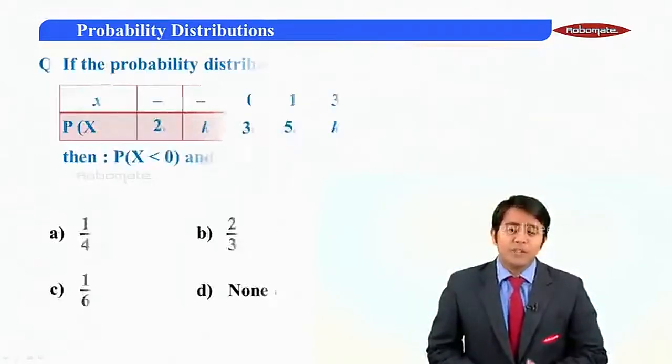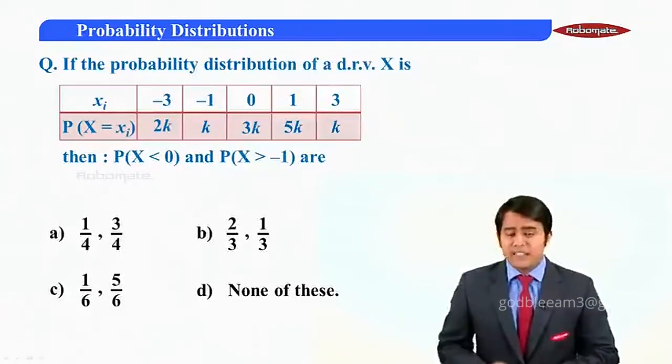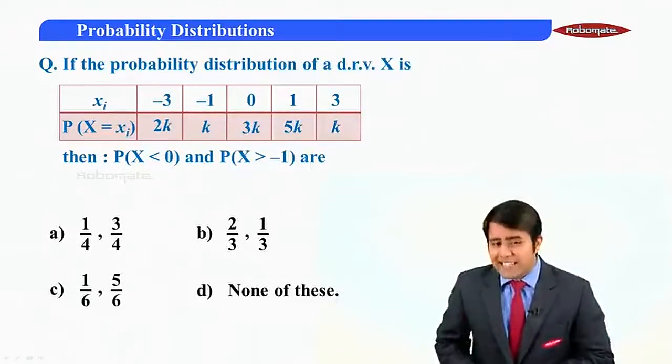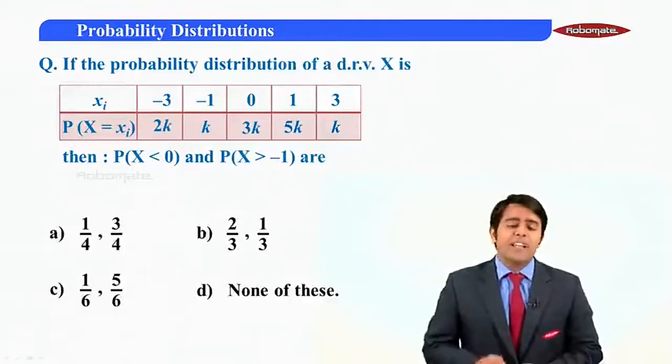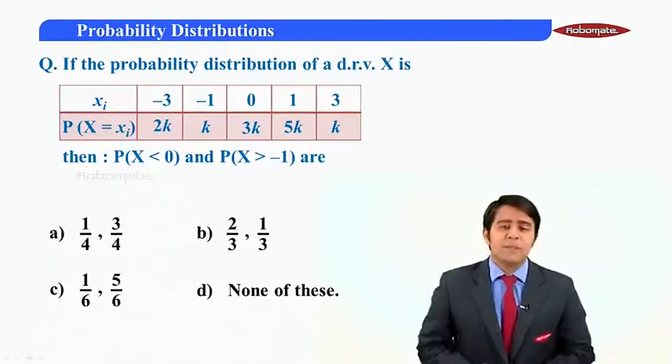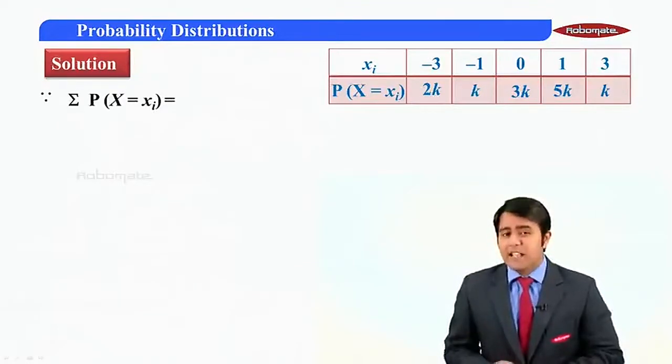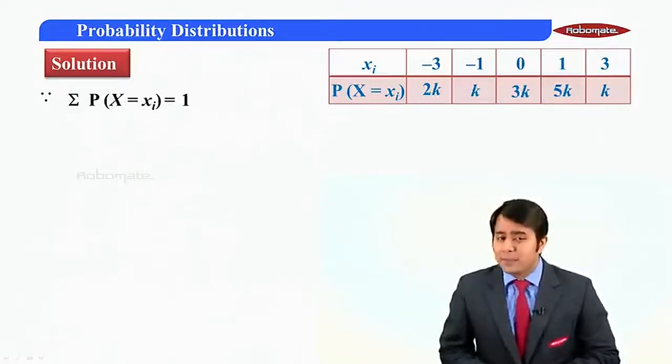Now moving further to the next MCQ here. This is the given probability distribution table for us. And we have to find out p of x less than 0 and p of x greater than minus 1. So let us start with the solution. First of all, to find this, we should understand that p of x is a PMF.